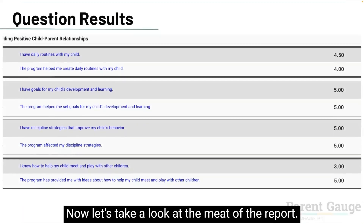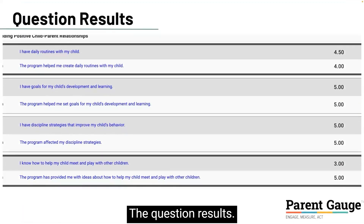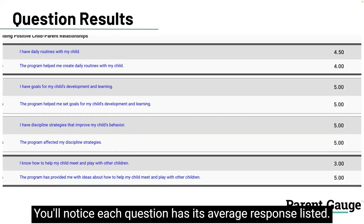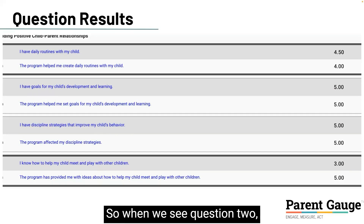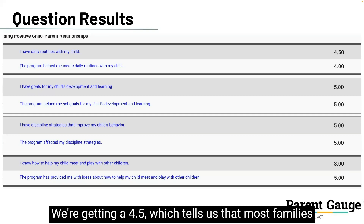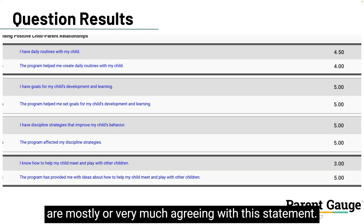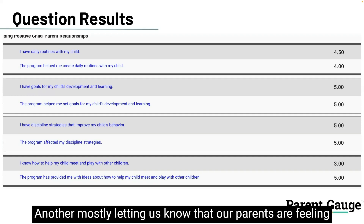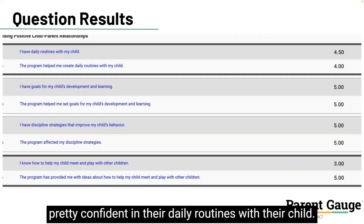Now let's take a look at the meat of the report — the question results. Here we can see questions two through five. You'll notice each question has its average response listed. For question two, 'I have daily routines with my child,' we're getting a 4.5, which tells us that most families are mostly or very much agreeing with this statement. And when asked if the program helps with that goal, we're getting a four — letting us know that parents are feeling pretty confident in their daily routines with their child.